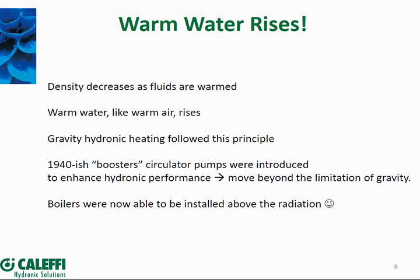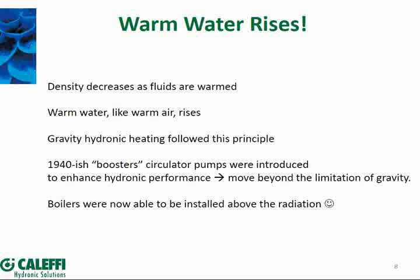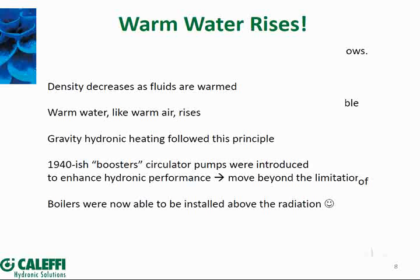Around the 1940s, based on Bell and Gossett material, booster circulators started coming out and enhanced performance significantly. They could do things not possible before — one big thing was they could now put the boiler anywhere in the building. With circulator pumps, they could move fluid wherever they wanted, zone it more easily, and shut flows off.